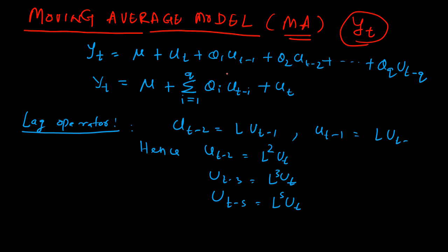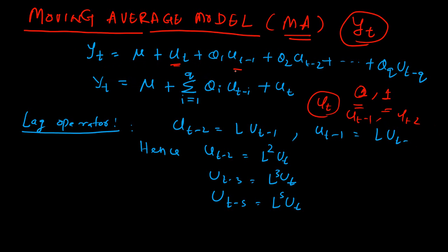A white noise has a mean of 0 and standard deviation of 1, and there are also one or two more properties, but those are the basic properties of a white noise process. UT is a white noise process; hence UT minus 1 is also a white noise process because it is a lag of UT, and UT minus 2 is also a white noise process. So YT is represented as a linear combination of white noise processes — that is the representation of a moving average model.